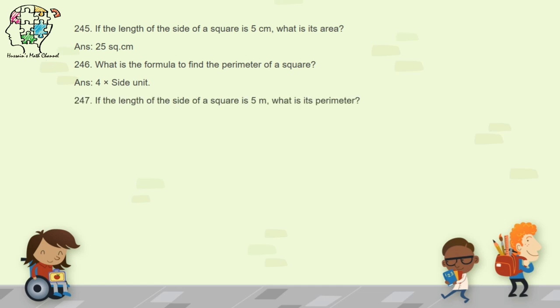Question 247: if the length of the side of a square is 5 centimeters, what is its perimeter? 5 times 4 equals 20 centimeters.